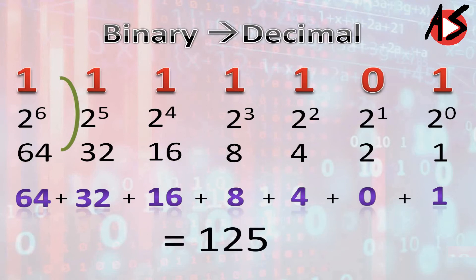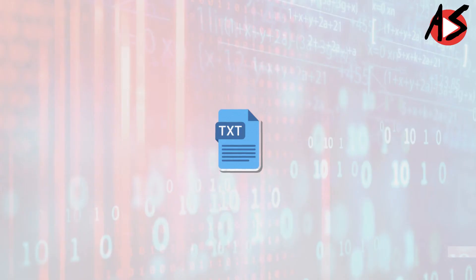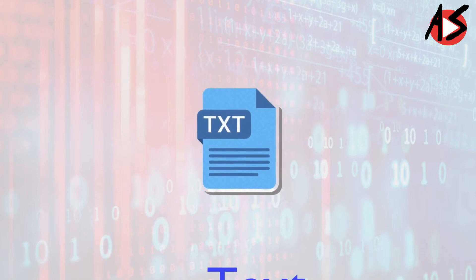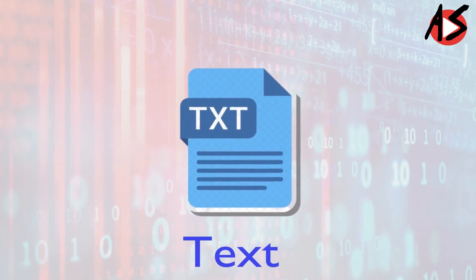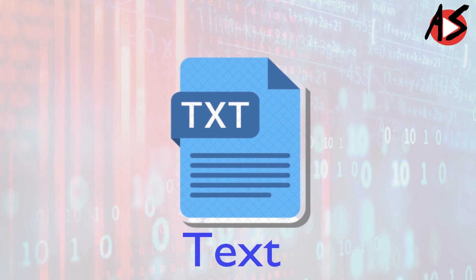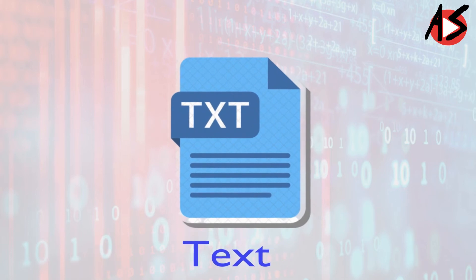Adding 64 + 32 + 16 + 8 + 4 + 0 + 1 we get 125 back. So the conversion of decimal to binary and binary to decimal is easy. Now let's understand how text or character data is stored in the computer in binary form.